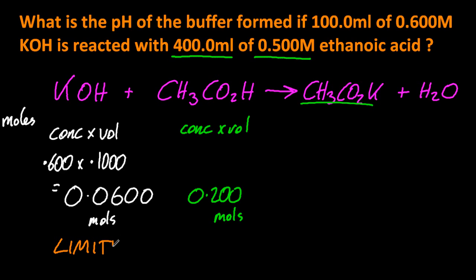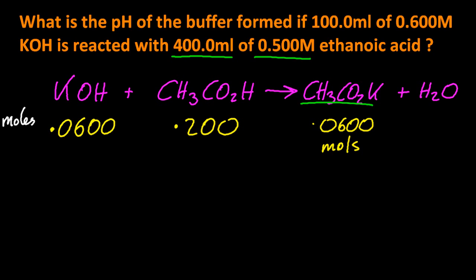So when you do the reaction, there will be a salt of a weak acid, and a weak acid present at the end. Let's work out how many moles of the salt of the weak acid. Well, 0.06 moles.